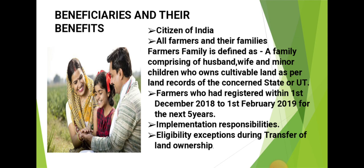Farmers who had registered between 1st December 2018 and 1st February 2019 are eligible for the next 5 years. The implementation responsibility is given to the respective states and union territories; it is their responsibility to identify the beneficiaries. In the case of the death of a land owner, succession occurs — for example, his son will get the next ownership and will be eligible for the scheme. However, if an owner gifts or executes a sale deed of the land to another party, then both parties will not be eligible for the benefits.